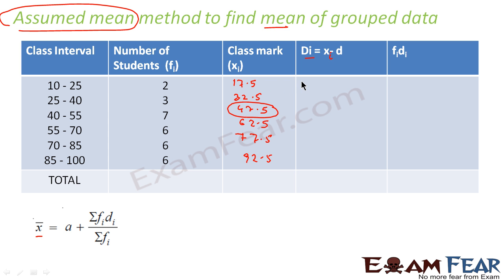Now I have to find di. di is nothing but xi minus a. That is 17.5 in this case minus a, that is 47.5, so this value comes out to be minus 30. This is 32.5 minus 47.5, that is minus 15.